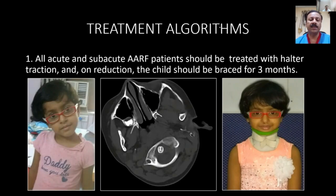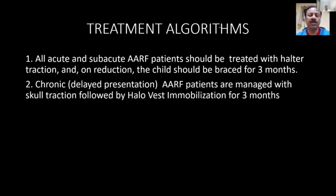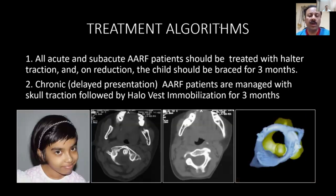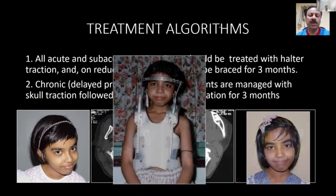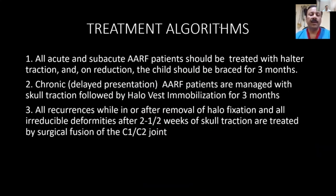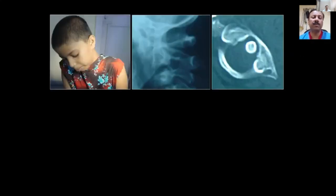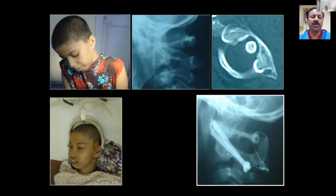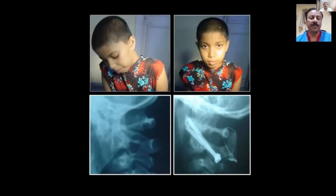In chronic or delayed presentations, patients are managed with skull traction followed by halo vest immobilization for three months. All recurrences while in or after removal of halo fixation, as well as all irreducible deformities after two and a half weeks of skull traction, are treated by surgical fusion of the C1-C2 joint. For example, one patient with a fixed irreducible atlanto-axial rotary fixation did not reduce with initial traction, so we performed a complete open reduction followed by C1-C2 Magerl's screw fixation, with the deformity completely corrected as the final result.